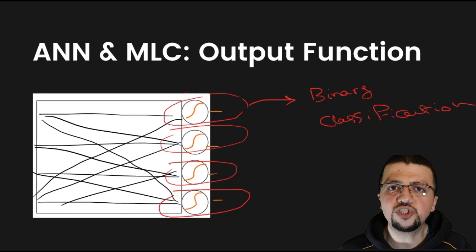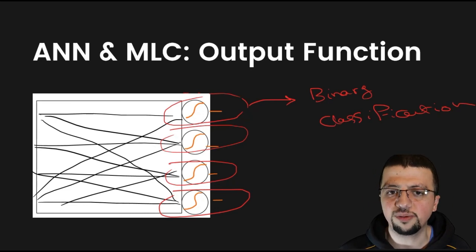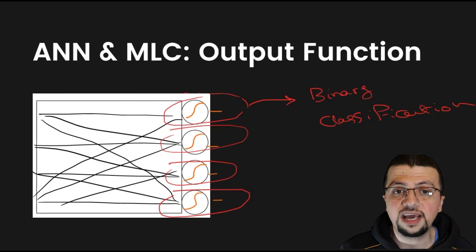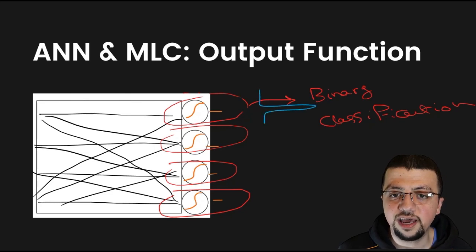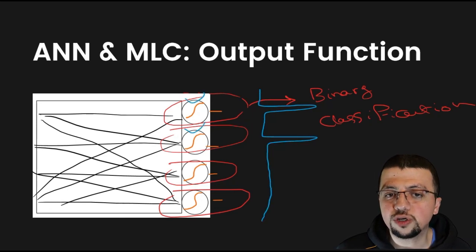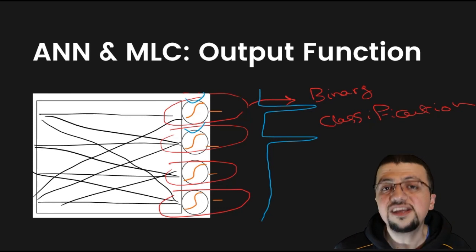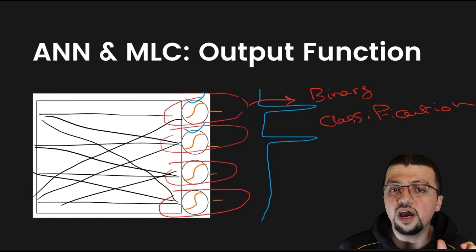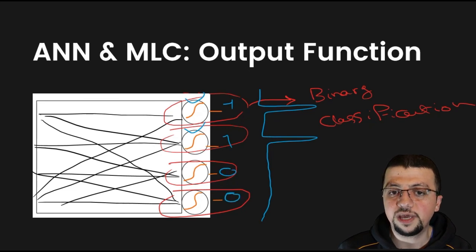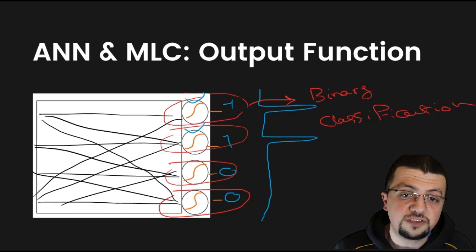If you have k classes, you have k binary classification problems — that's how you treat multi-label classification. Each output can range from zero to one independently of the others, so you can have simultaneously high values for the first and second outputs and low values for the others. This means the network believes that input data belongs to class one and class two at the same time. In the next video, we're going to talk about how to represent the ground truth vector for a multi-label classification problem.